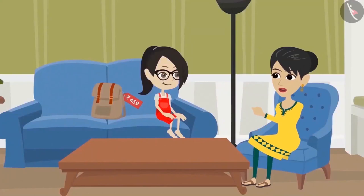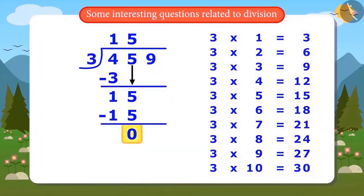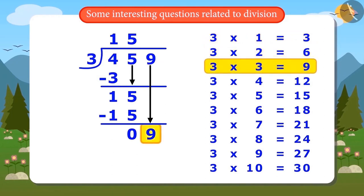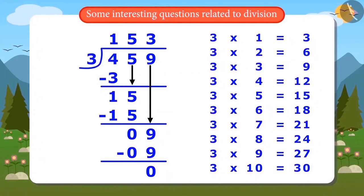Perfectly done, Vandana. Now repeat the same sequence with the rest of the digits. The remainder is 0, so let's write the next number 9 next to it. Now you have to divide 9 by 3. 3 ones are 3, 3 twos are 6, 3 threes are 9. The answer after dividing 9 by 3 is 3, and the remainder is 0. There is no digit left to divide. This means that the whole number is divided by 3 and the answer is 153.